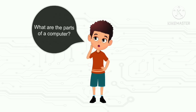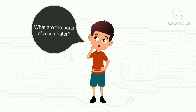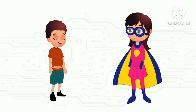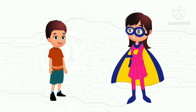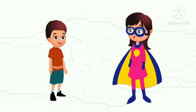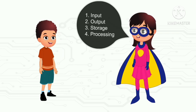Suyog understands that a computer is an electronic machine that works on three basic steps called the IPO cycle. He wonders what are the parts of a computer. Arohi comes to his rescue: just like you have different body parts, computer parts are also divided into four types — input, output, storage, and processing.